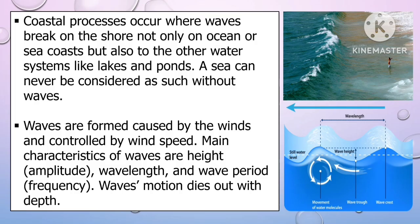Coastal processes occur where waves break on the shore, not only on ocean or sea coasts but also in other water systems like lakes and pans. A sea can never be considered as such without waves. Waves are formed and caused by the winds and controlled by wind speed. The main characteristics of waves are height or amplitude, wavelength, and the wave period or frequency.